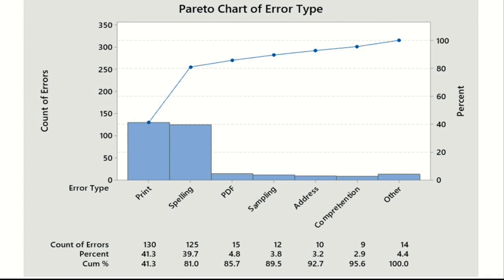You can also look at the bottom part of the graph which shows the cumulative percentage. This means 41.3% of the errors are contributed by the print error type, and if you include the second error type — spelling mistake — both of them contribute to 81% of the total errors. So if we work on these two error types, we will be able to handle 81% of the project problem.